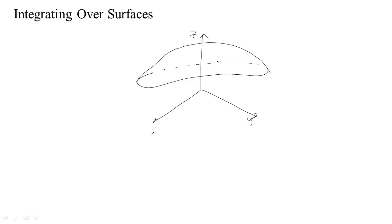Think about maybe a flat piece of paper that you've shaped into some form, or like the skin of a basketball — the rubber part of the basketball — that's a surface. That's what we want to work with.